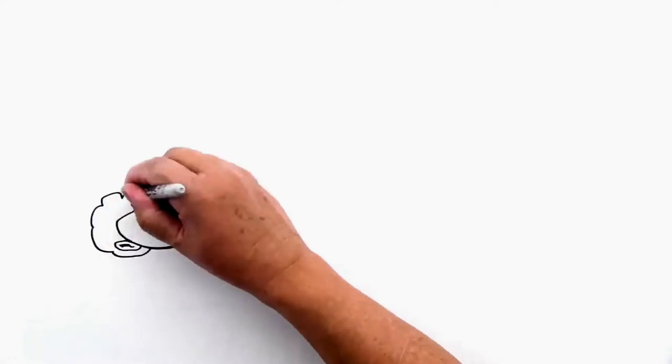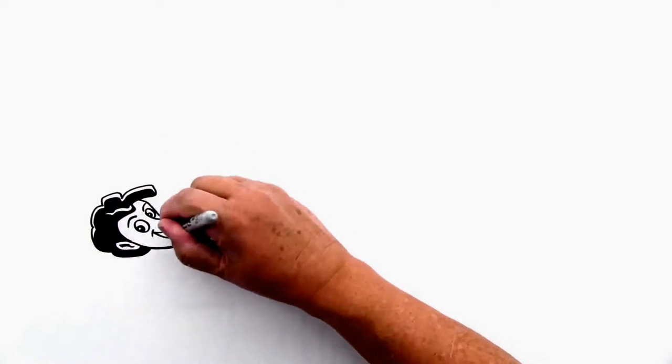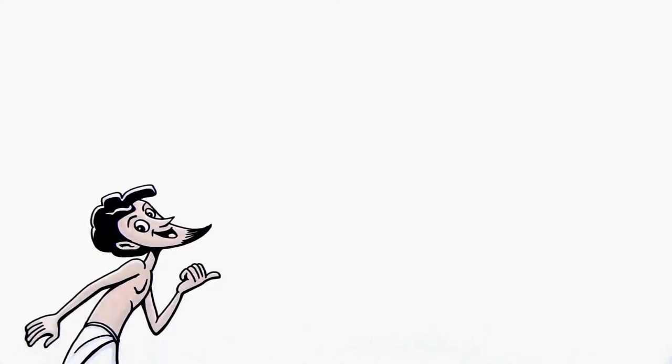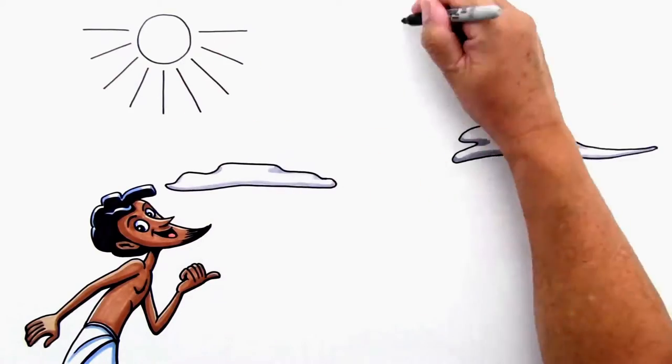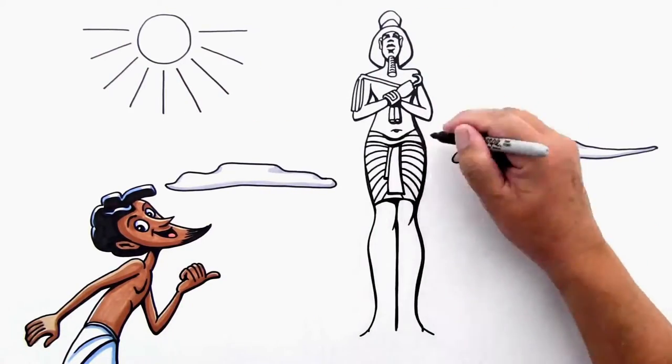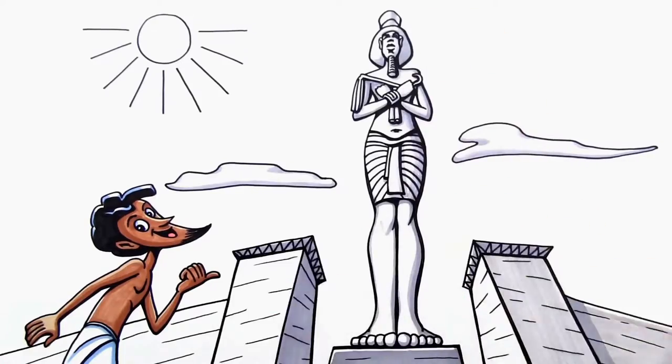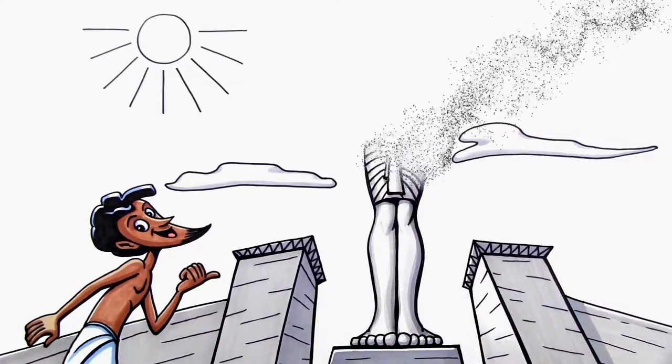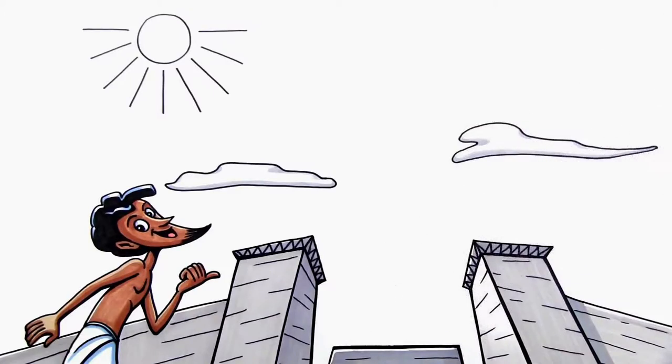Except for one brief moment called the Amarna period, when a pharaoh named Akhenaten ushered in a new style and a new religion. All of a sudden, faces got stretched, bodies got streamlined and lengthened. Thin was in. But when Akhenaten passed away, Egypt quickly reverted back to the old familiar ways.